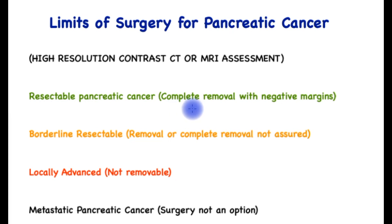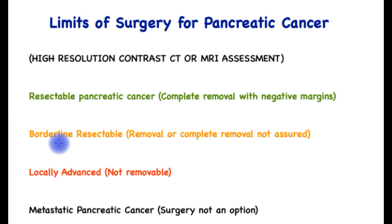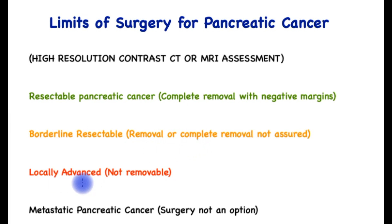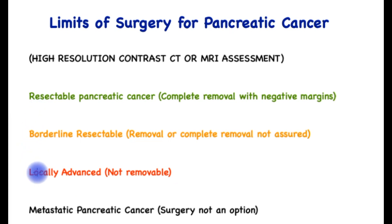In the resectable case, an attempt can be made with an expectation that there will be an R0 resection — margins negative of cancer cells. If the pancreatic cancer is close to important blood vessels, that assumption cannot be made; that situation is called borderline resectable, where complete removal of cancer is not assured. Finally, the cancer may be locally advanced, meaning it cannot be removed with surgery because of its association with important structures. All three situations occur when the cancer is localized to the pancreas.